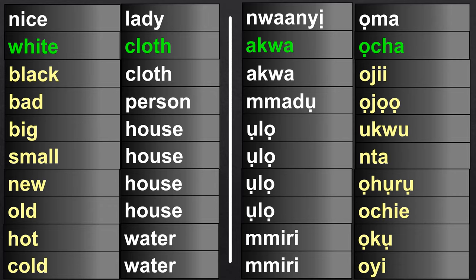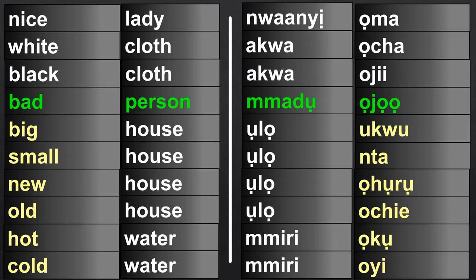White cloth: Akwa ocha. Black cloth: Akwa oji. Bad person: Madu ojo.